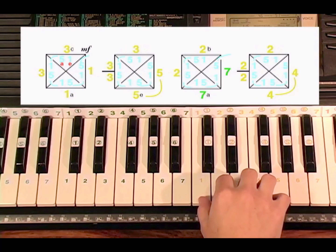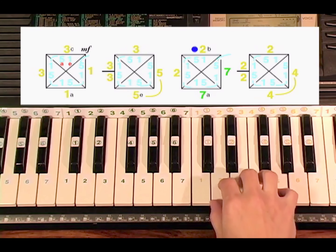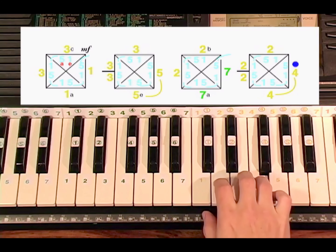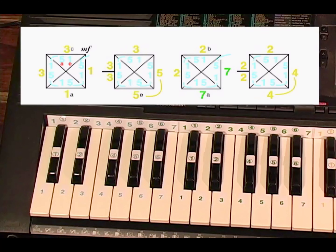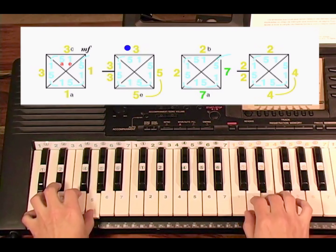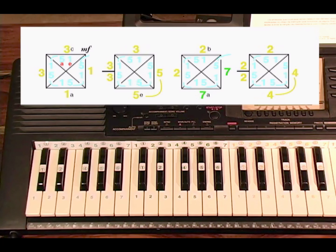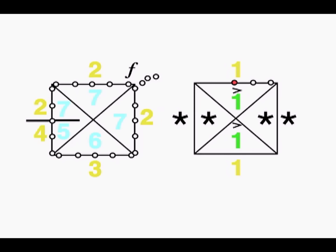Let's play the first four measures of Skip to My Lou with the right hand. Now let's play the first four measures with both hands. With your left hand, you will play the notes one and five blue over eight beats or two squares. Make sure you play the notes for the left hand, one and five blues, at the same time as the right hand, three yellow. Try practicing measures seven and eight separately — these two are a little more difficult than the rest of the song.